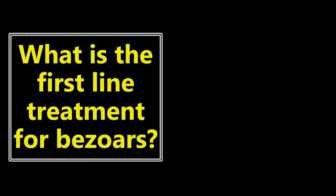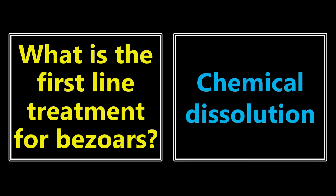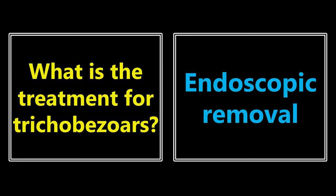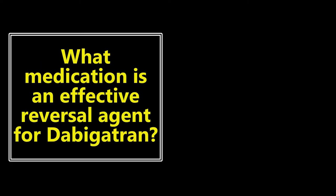What is the first-line treatment for bezoars? Remember, bezoars are a tightly packed collection of partially digested or undigested material, and the treatment is going to be chemical dissolution. The important thing to note is that this does not work for trichobezoars, which usually contain hair. The treatment for trichobezoars is actually endoscopic removal — chemical dissolution does not work, so you have to go in via endoscopy and physically remove it.